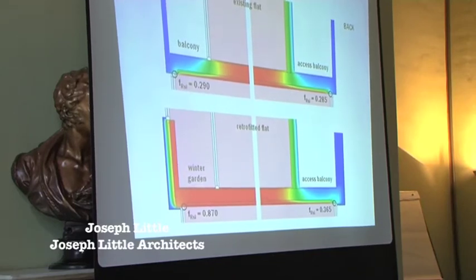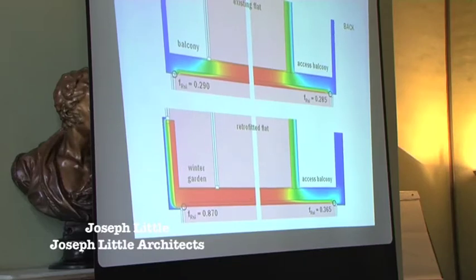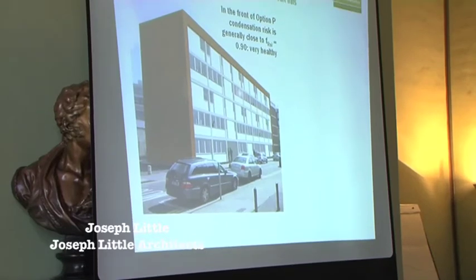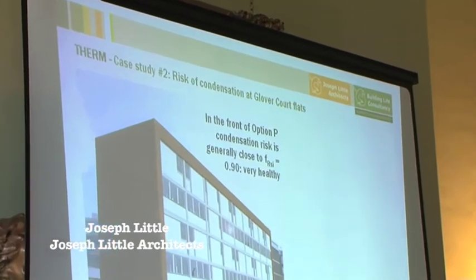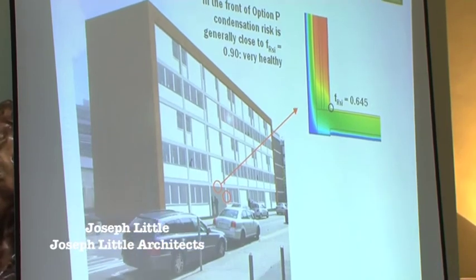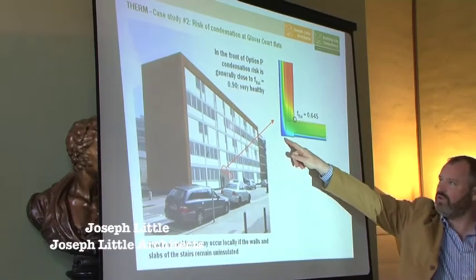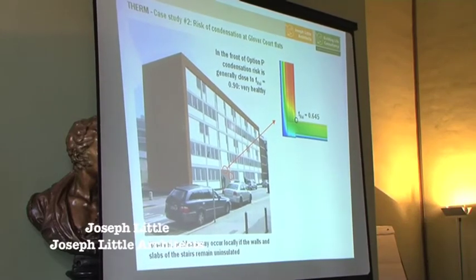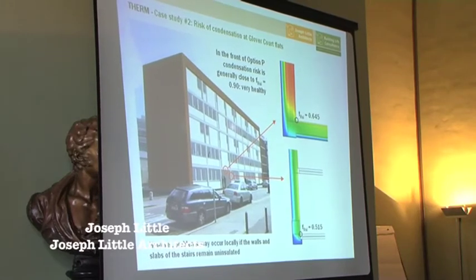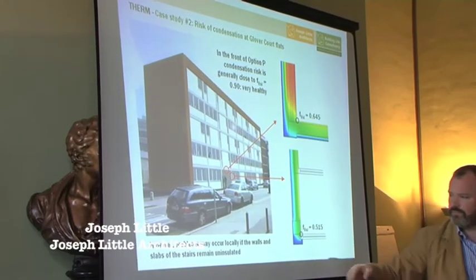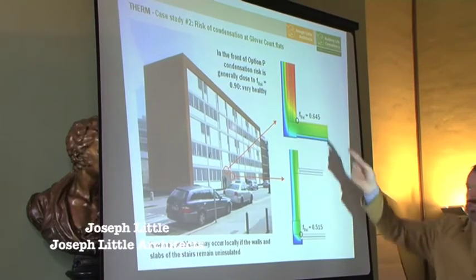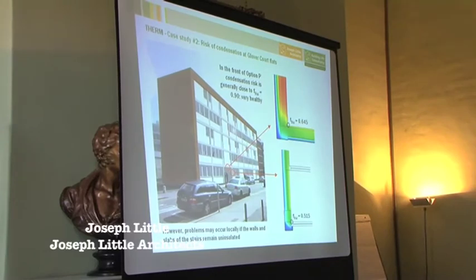With option P, we could say yes, you're going to reduce your energy loss and improve condensation risk at the front of the building, but not at the rear. We need extra funding — we need to do this job properly and do it once. The front of option P condensation risk is generally close to 0.9, way above 0.75, very healthy. But there are areas we need to be careful about — for instance, the area where there's a walkway through to the back of the site has a factor of 0.515, and 0.65 at other points — not good enough. It's a powerful tool and it really changes the way you think about architectural design and what's acceptable.